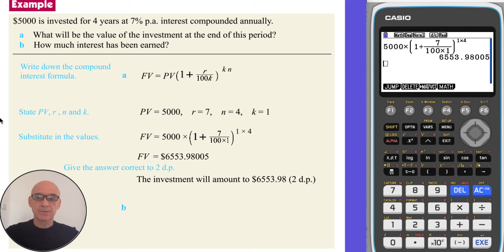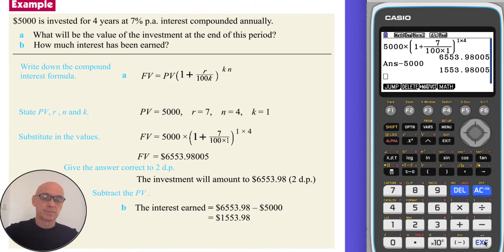In part B, to find how much interest has been earned, we need to subtract the present value. So subtracting 5,000 gives interest earned of $1,553.98.